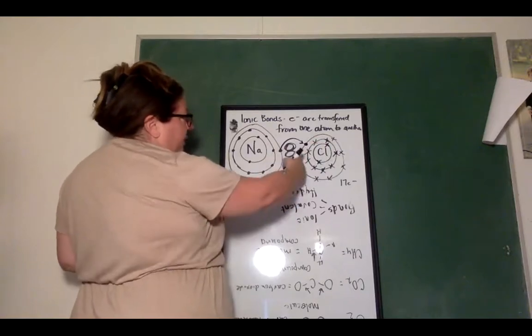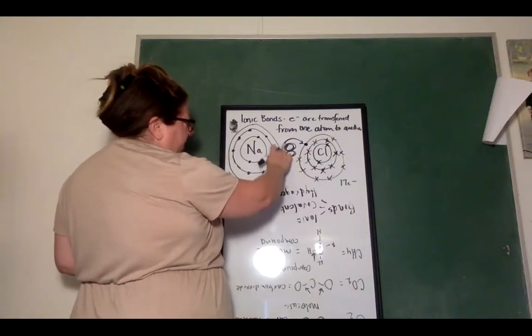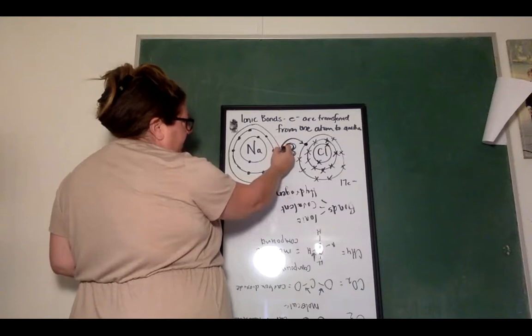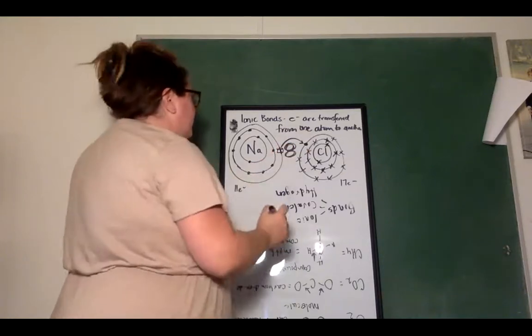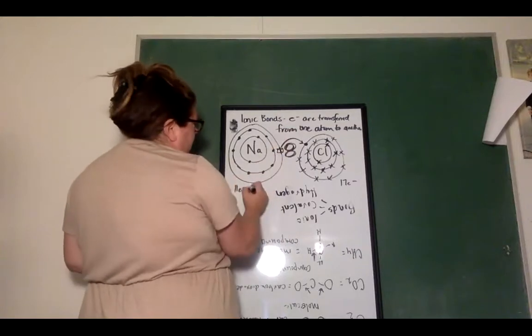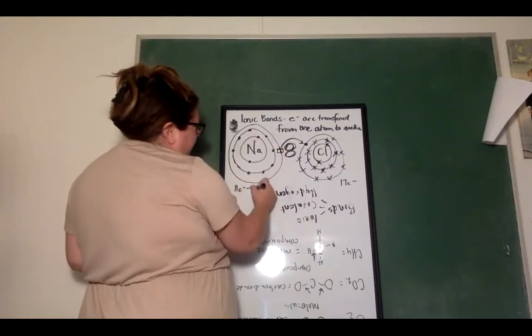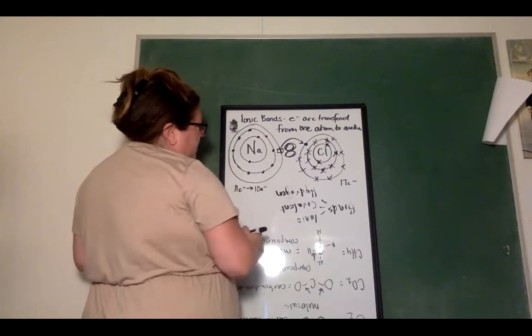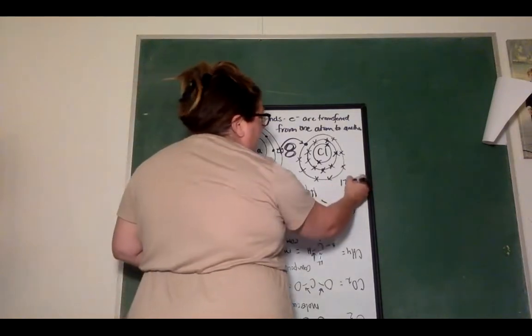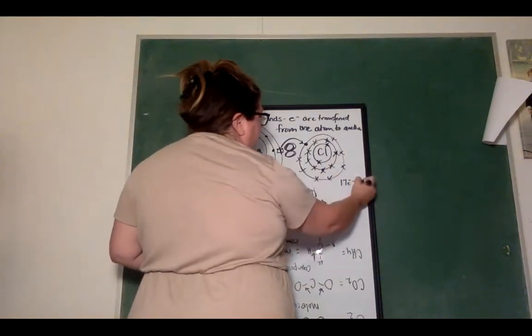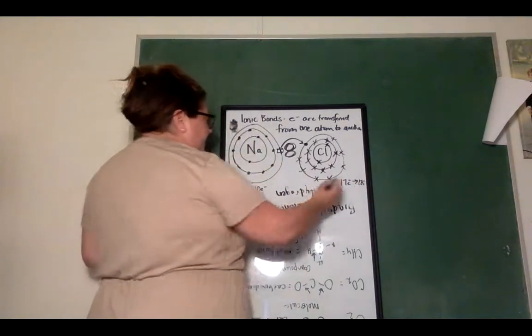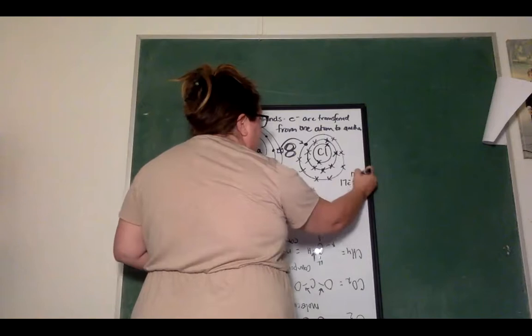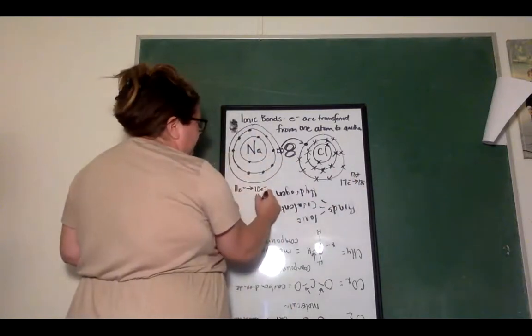So now chlorine, and I'm going to take it off of here. So there it went. It used to be right there. Okay, and it went over there. So now sodium went to 10 electrons, and chlorine went to 18 electrons. This one still has 17 protons. This one still has 11 protons. What does that make the charge? Makes this charge one positive, and it makes this charge one negative.